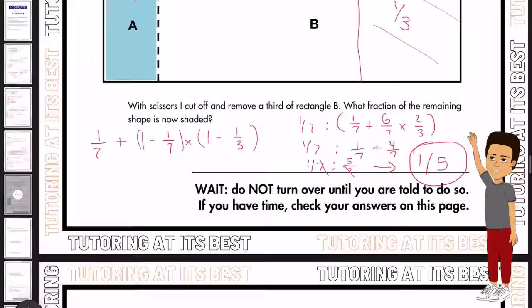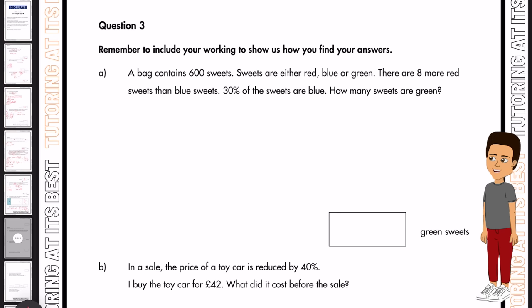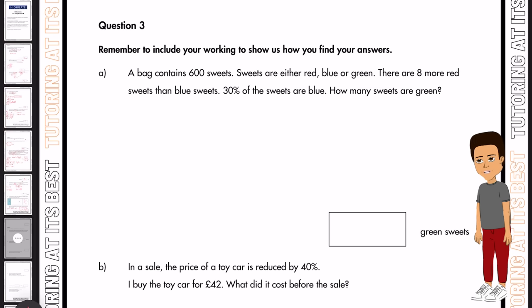Let's move over to question three. So a bag contains 600 sweets, and the sweets are either red, blue or green. There are eight more red sweets than blue sweets, and 30% of the sweets are blue. So how many sweets are green? We know we need to work out 30% of the sweets that are blue. We know 10% is 60, so 60 times three is 180. So we know there's 180 blue sweets.